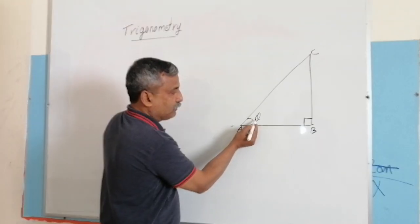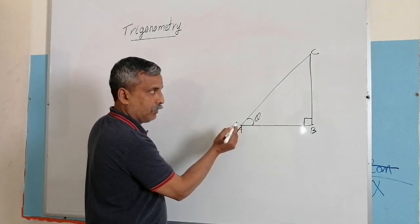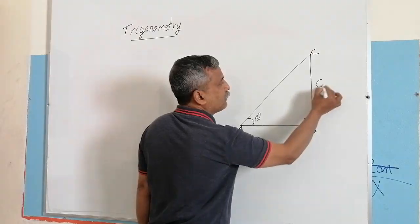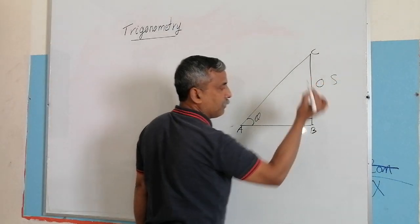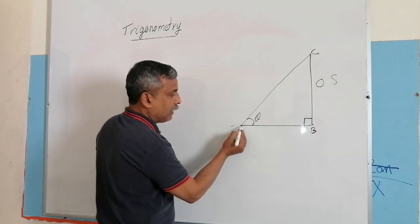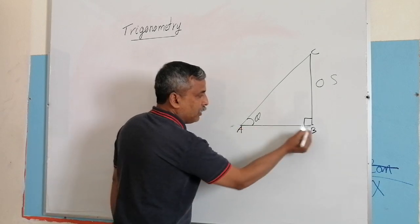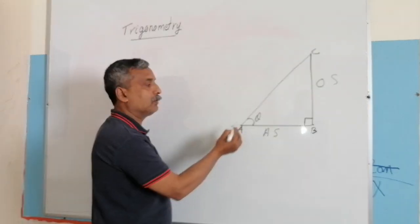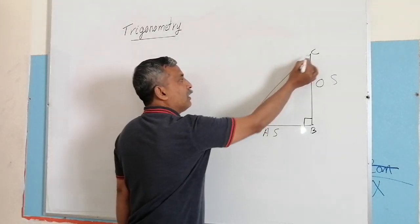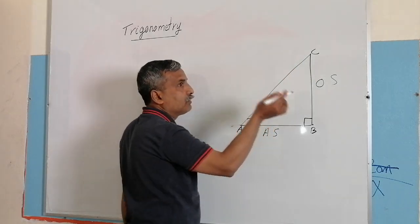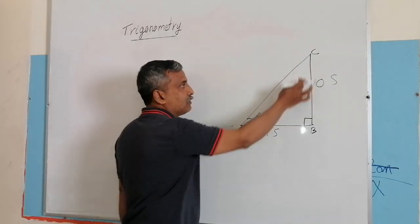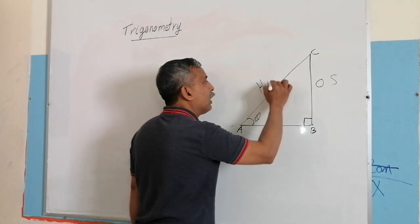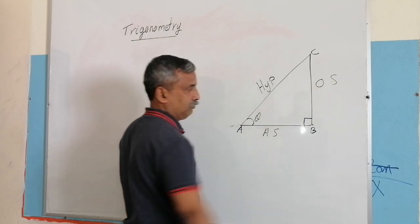According to this angle, the side BC is the opposite side, the side AB is the adjacent side, and the side AC, which is the biggest side in a right triangle, is always called the hypotenuse.